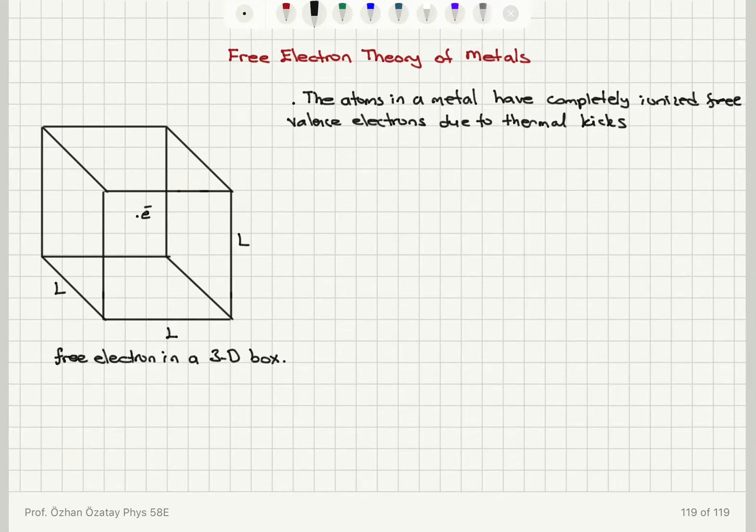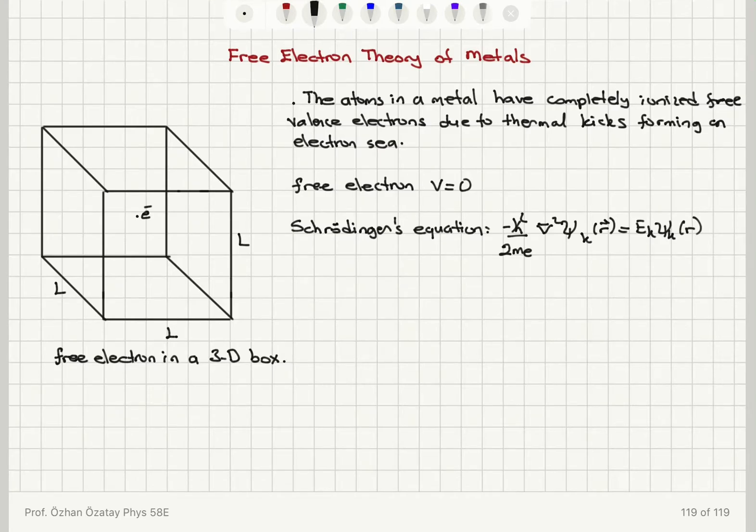Thermal energy is enough to release them into the electron sea. Now for a free electron we have potential energy equal to zero. If you write Schrödinger's equation, this is going to be familiar from your quantum mechanics class where we study the electron in a three dimensional box. We have -ℏ²/(2m)∇²ψ_k(R) = Eψ_k(R). So we have no potential energy.